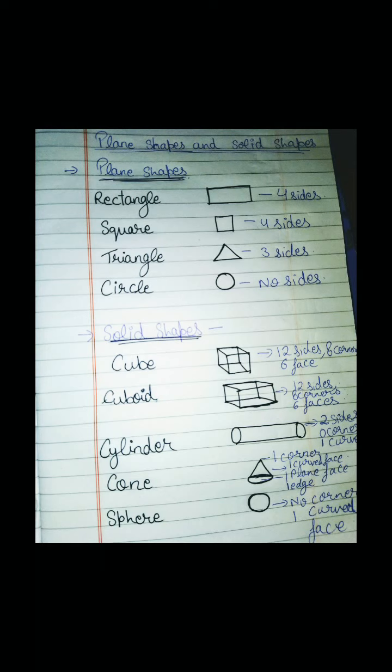Now a cylinder. It has 2 sides, 0 corners and 1 curve. Then cone. Cone has 1 corner, 1 curved face, 1 plain face and 1 edge also.